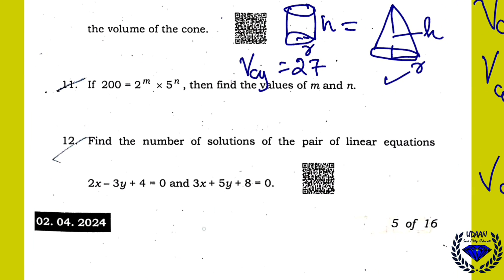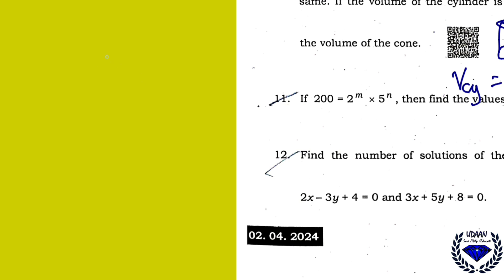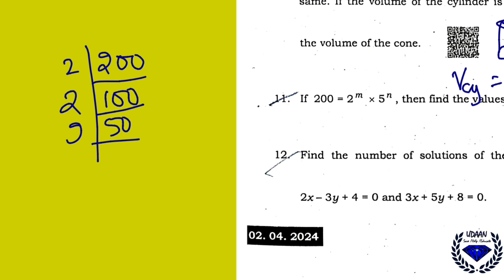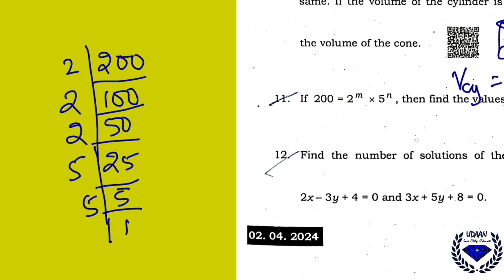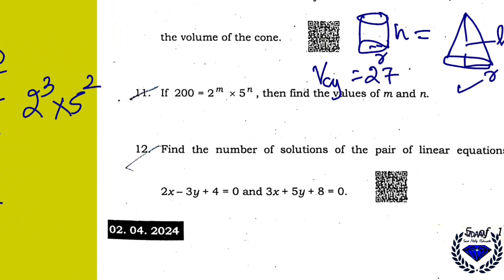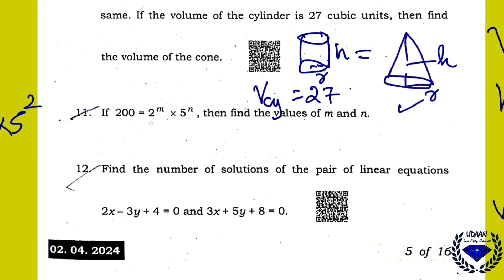If 200 = 2^m × 5^n, find m and n. Factorize 200: 200 = 2 × 100 = 2 × 2 × 50 = 2 × 2 × 2 × 25 = 2³ × 5². So m = 3 and n = 2.